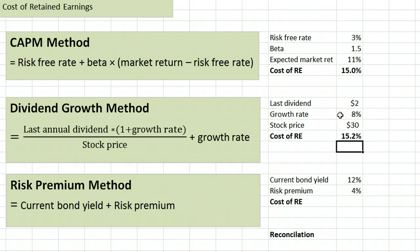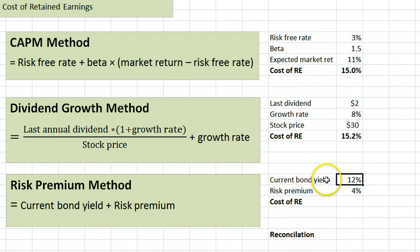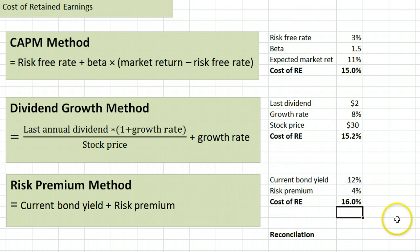That gives us a cost of retained earnings of 15.2%. In the risk premium method, we recognize that a stock is more risky than a bond, so we take the firm's bond yield and add a risk premium to get the cost of retained earnings. The risk premium added is usually between 3% and 5%, and you would have to be given this information, as well as the current bond yield. Here the current bond yield is 12%, and assuming the stock is 4% more risky, that gives us 16% as the cost of retained earnings.